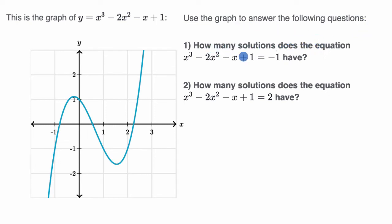How many solutions does the equation x to the third minus two x squared minus x plus one equals negative one have? Pause this video and try to think about that.